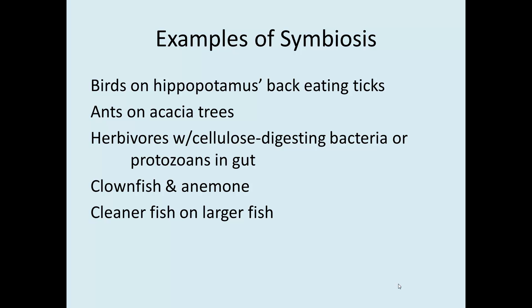In each of these cases, everybody gets something. The bacteria get food and an environment to live in, and the herbivore gets energy out of cellulose digestion. The ants are provided home and food in the acacia trees, and the acacia trees are protected from everything from elephants to other ants and insects. The birds or cleaner fish get a meal, and the animals they're on get parasites removed. So in all cases, it's considered symbiotic.